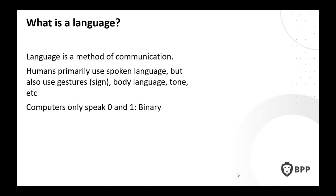Humans primarily use spoken language, but we also use gestures, sign language — there are several established types of sign language — body language, and tone. Computers, on the other hand, speak in ones and zeros — that's called binary. Ones and zeros make up bits and bytes and nibbles; you may have heard of terabytes. Essentially, computers only speak ones and zeros.